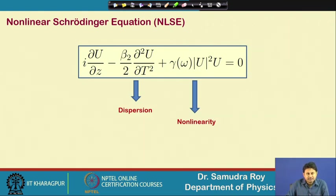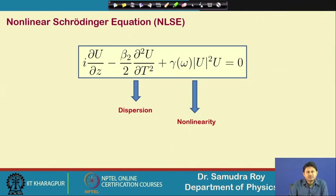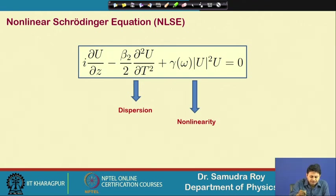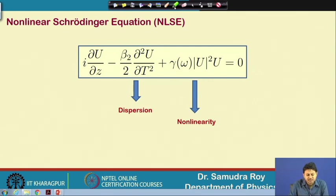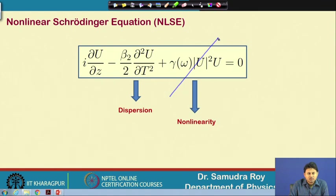This is the basic concept of optical soliton, but in order to understand it in detail we need to solve the equation shown on the display board — an equation that contains two terms. Last time we derived this equation from Maxwell's equations. If you remove the nonlinear part, the rest of the equation is similar to the Schrödinger equation from quantum mechanics.